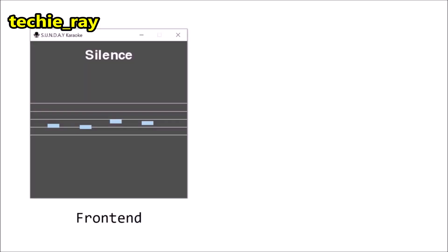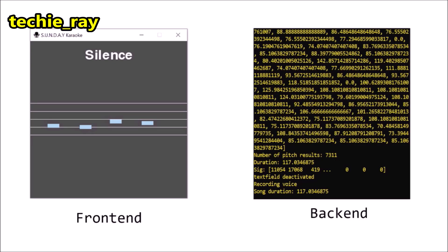So our karaoke app will have two elements: one, the front-end interface which the user interacts with, and two, the backend algorithm which processes and analyzes your singing.